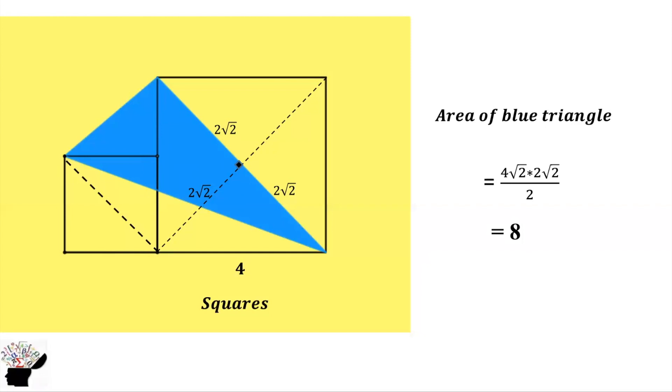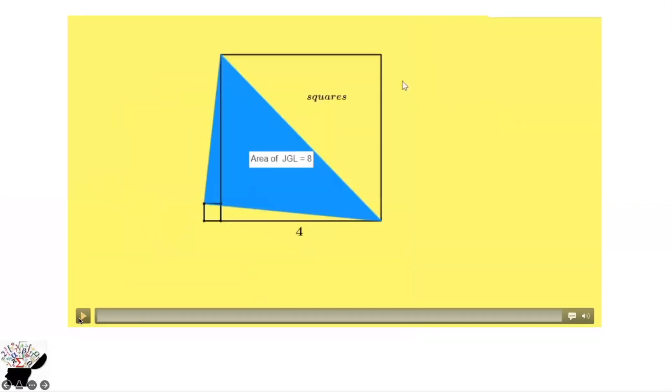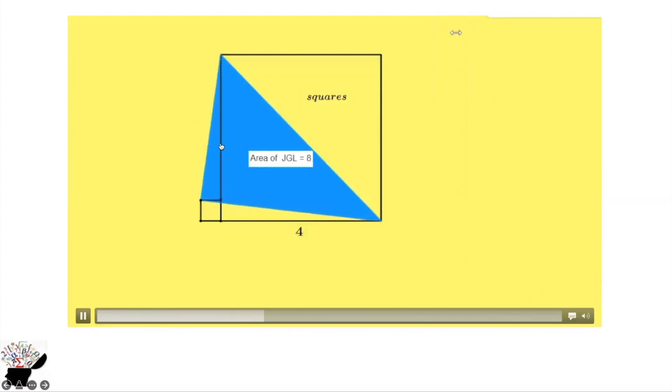That is why we have 8. Let us look at the animation. We can see here that the height—the area of the triangle—doesn't really depend on the smaller square. So it is half of the bigger square, which is 8. It doesn't change.